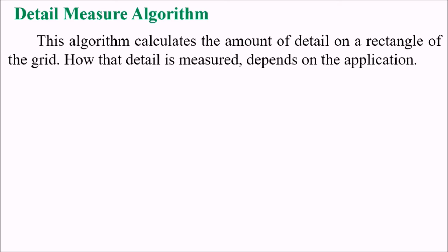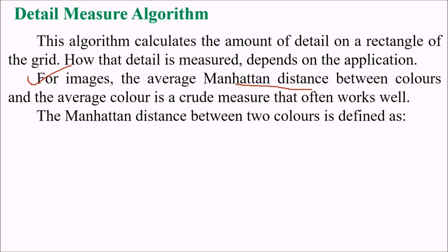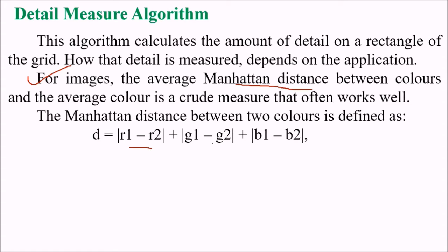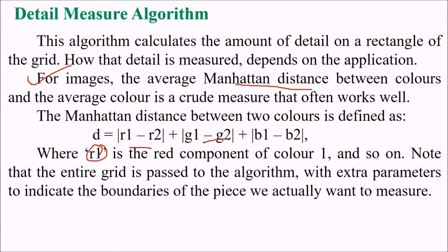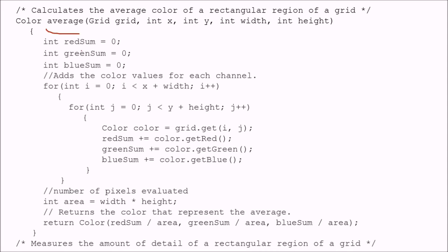The detail measure algorithm calculates the amount of detail in a rectangle of the grid. How detail is measured depends on the application. For images, the average Manhattan distance between colors and the average color is a crude measure that often works well. Manhattan distance between two colors is defined as |R1−R2| + |G1−G2| + |B1−B2|, where R, G, B are the red, green, and blue components. The entire grid is passed to the algorithm with extra parameters to indicate the boundaries of the region to measure.